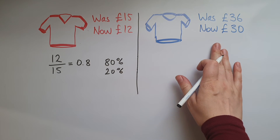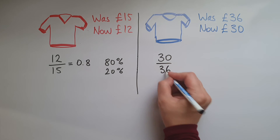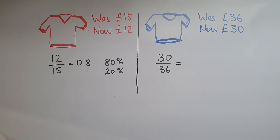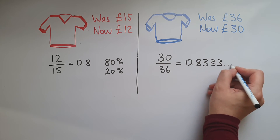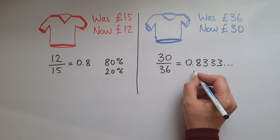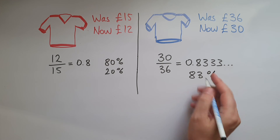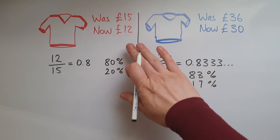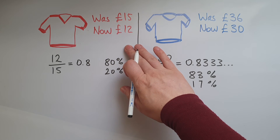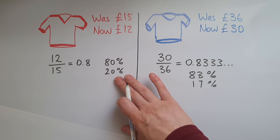The blue shirt is now 30 out of 36, that was the original price. It gives us 0.833, with the three recurring, so that is about 83%, which means the discount is about 17%. So as you can see, although there's been only a three pound discount, that is 20% of the original price — a 20% discount.